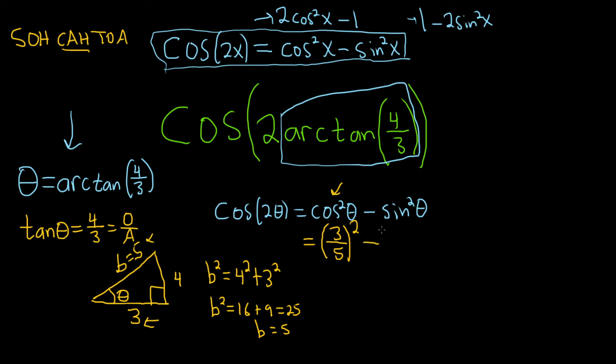Minus. And then sine is opposite over hypotenuse. So it'll be 4 over 5 squared. Because the opposite is 4 and the hypotenuse is 5.